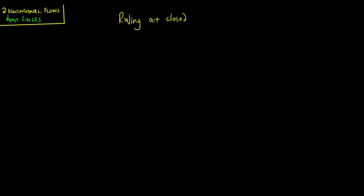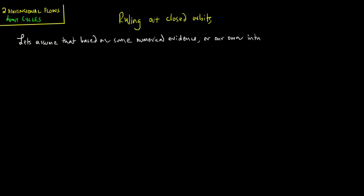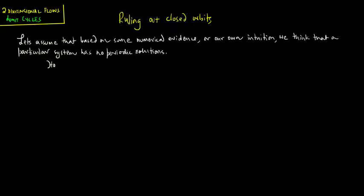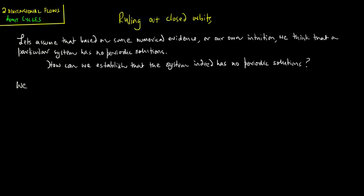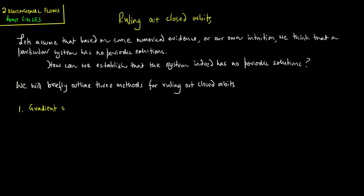We focus on ruling out closed orbits. Suppose that based on some numerical evidence or our own intuition, we think that a particular system has no periodic solutions. We will briefly outline three methods for ruling out closed orbits: one is gradient systems, two is Lyapunov functions, and three is Dulac's criterion.